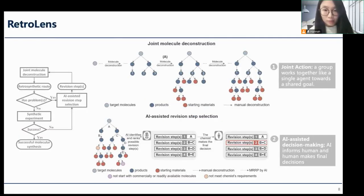Finally, we developed a human-AI collaborative system, RetroLens, that facilitates chemists and AI to collaborate with each other on MRRP for complex molecules. Specifically, our system integrates two forms of human-AI collaboration: joint action and AI-assisted decision-making.